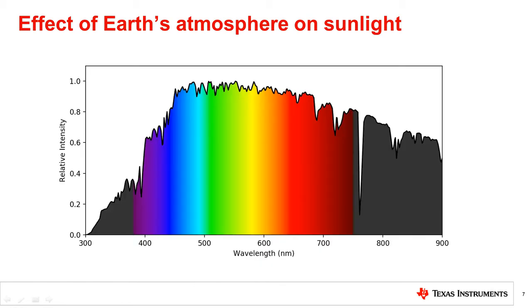Here is the zoomed-in view of the spectrum of sunlight that makes it through the atmosphere and down to sea level. We can see that the intensity of light is now quite flat within the visible region.